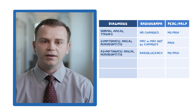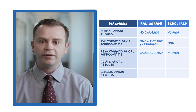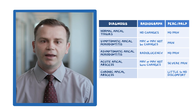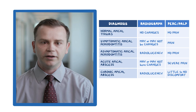Acute and chronic apical abscesses were described earlier. Acute apical abscess usually has severe pain and may or may not have radiographic changes due to its quick onset. Chronic apical abscess usually has little to no discomfort and the presence of apical radiolucency, since the infection has eroded away at the periodontium, releasing the pressure.